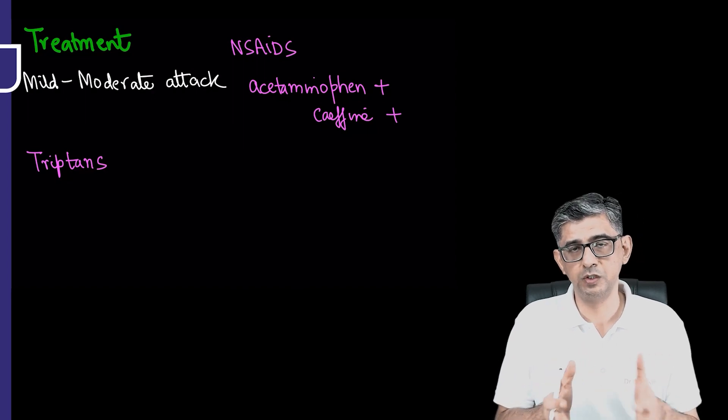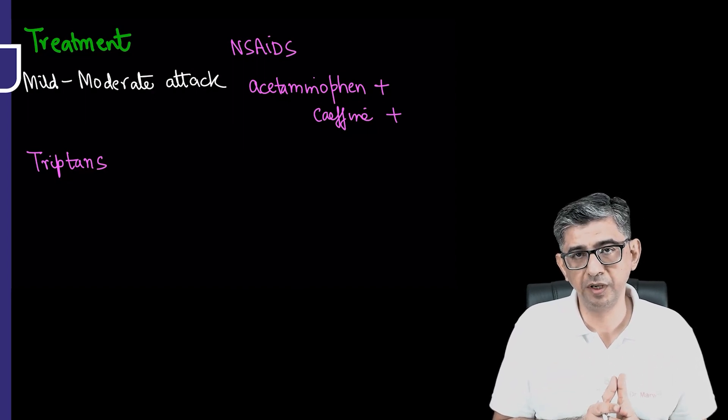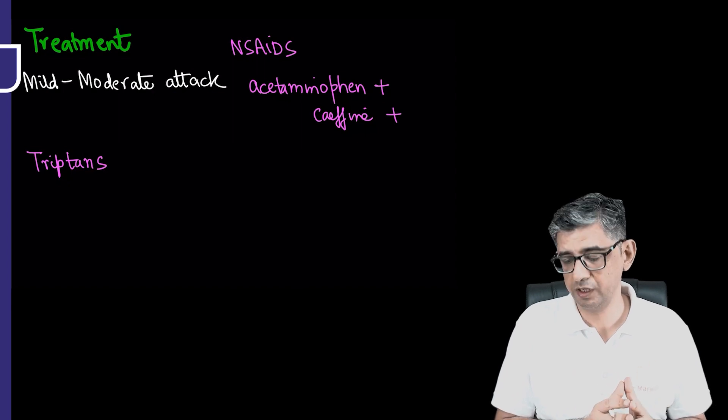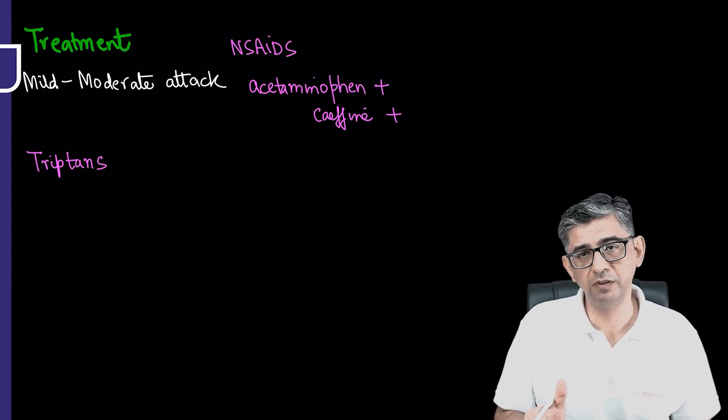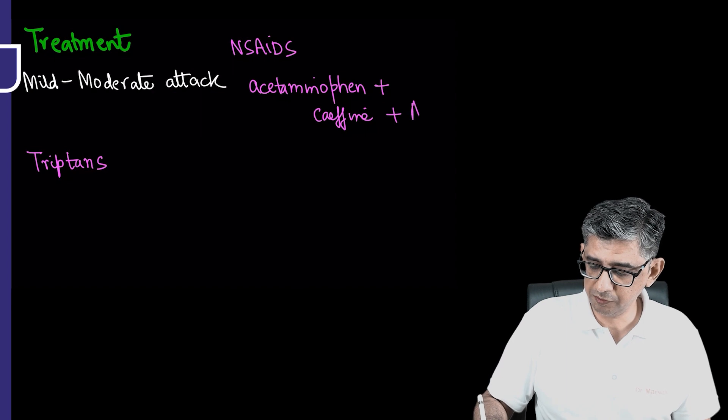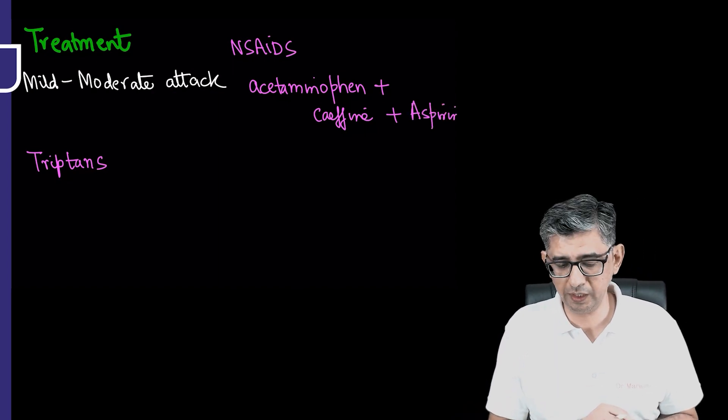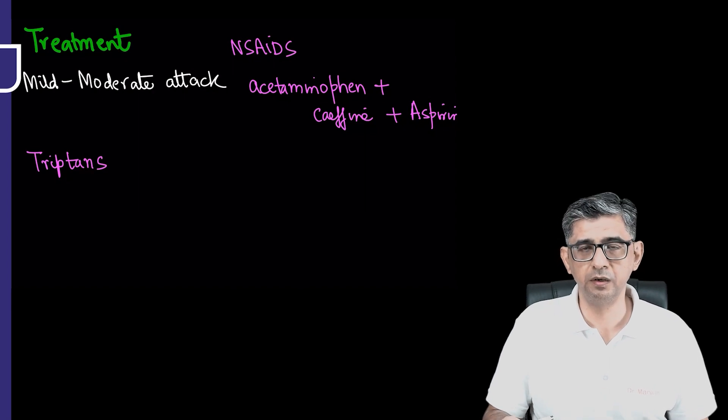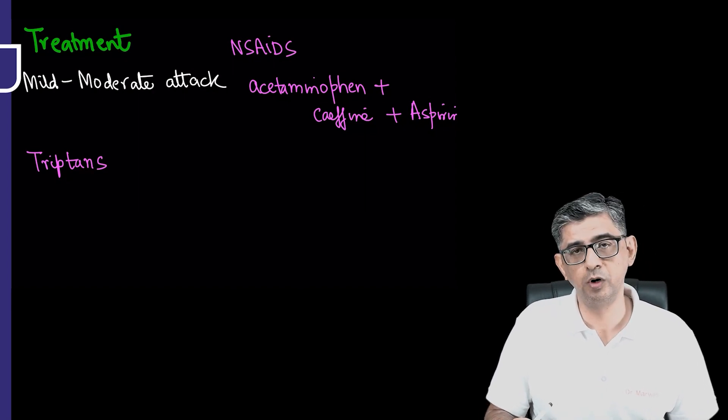That is why the nociceptive fibers are getting triggered by the release of calcitonin gene-related peptides. So caffeine will be working there, and if the tablet is also containing aspirin, though it might contribute to a bit of gastritis, NSAIDs are the main weapons you'll be using in mild to moderate attack.